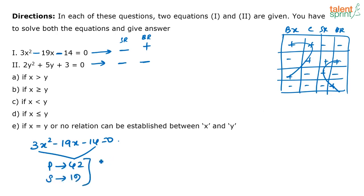What can be the two numbers? The two numbers can be 21 and 2. Because 21 into 2 is 42, and 21 minus 2 is 19.